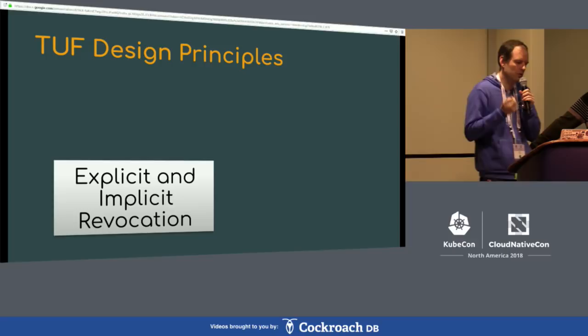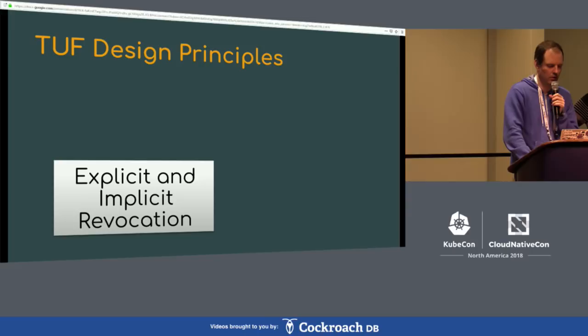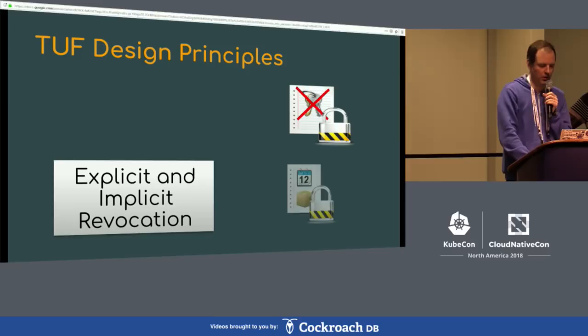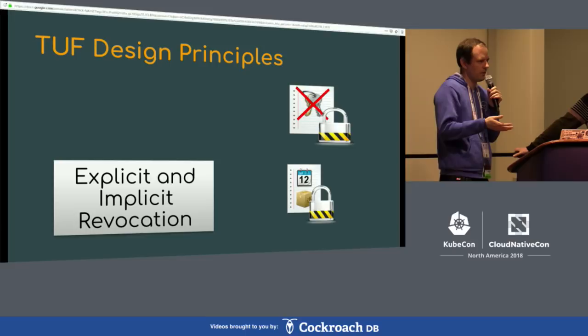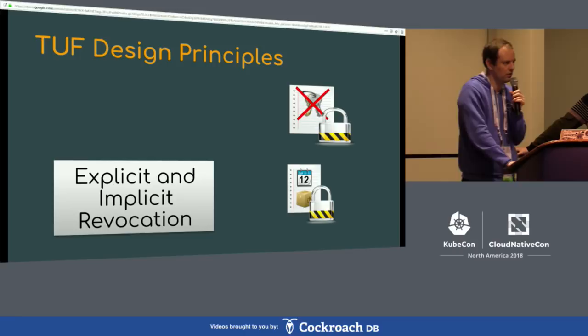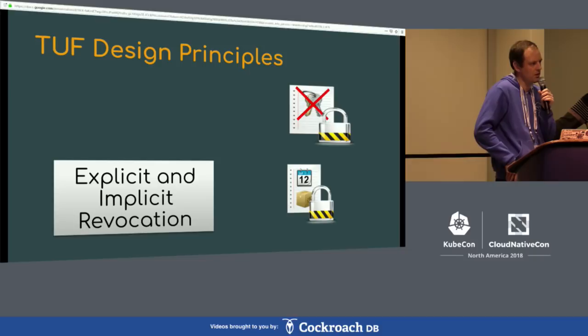TUF has two revocation mechanisms: explicit and implicit. Explicit revocation lets you say a key is no longer trusted and to trust another key instead. Implicit revocation means a key expires after a certain date. This is useful even in situations where users are blocked from receiving updates — which happens in some countries with oppressive regimes that stop users from getting updates to more easily compromise them. The user is at least warned their keys have expired and should have been rotated out.